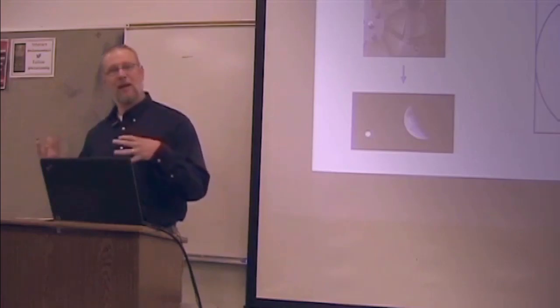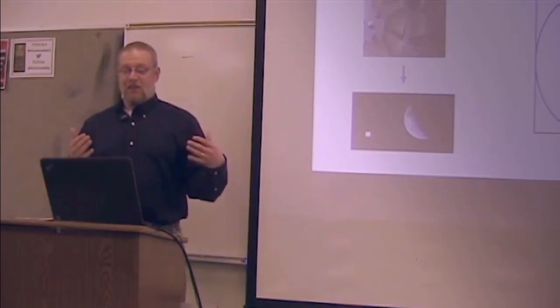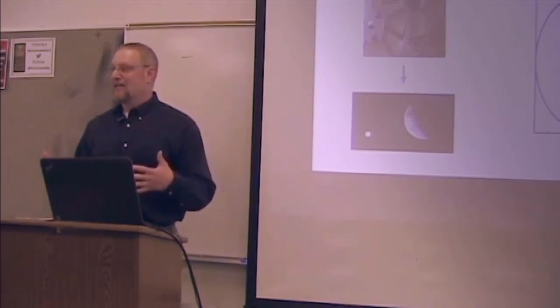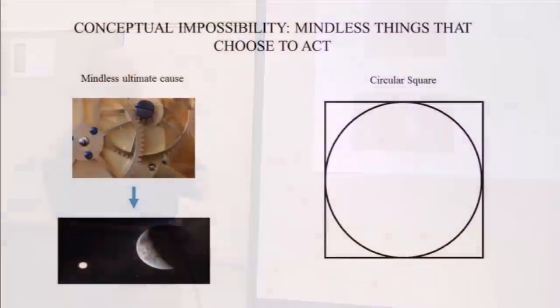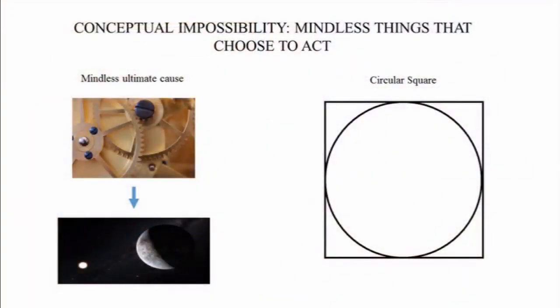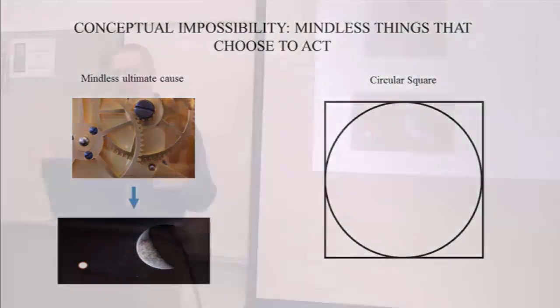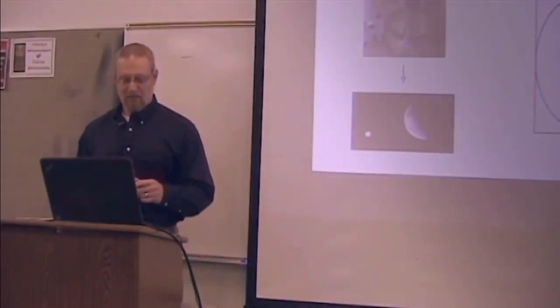Which also leads us to a conceptual impossibility. Mindless things that choose to act, that is a conceptual impossibility. So the idea of a mindless ultimate cause is as impossible as a circular square. It's in the same category. It's that impossible.